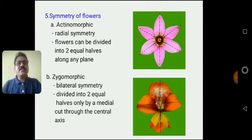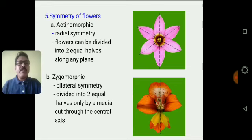These are the symmetry types of the two flowers — actinomorphic and zygomorphic. The actinomorphic flower is also called the regular or complete flower, meaning it can be divided into two equal halves along any plane. The zygomorphic flower has bilateral symmetry, meaning it can be divided into two equal halves only by one medial cut along a particular axis.